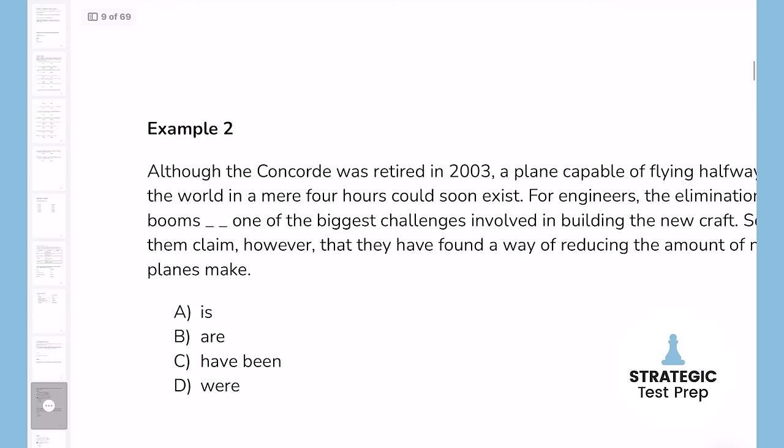The first example deals with subject-verb agreement. You'll know you're on a subject-verb agreement question because the answer choices will all be different verb tenses. In this case, I can see is, are, him, and were — these are verbs of being. Don't count these out; it's very easy for students to mistake them for something else, but these are verbs too.